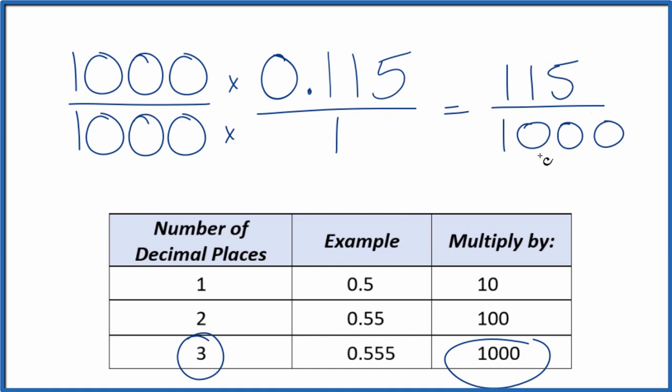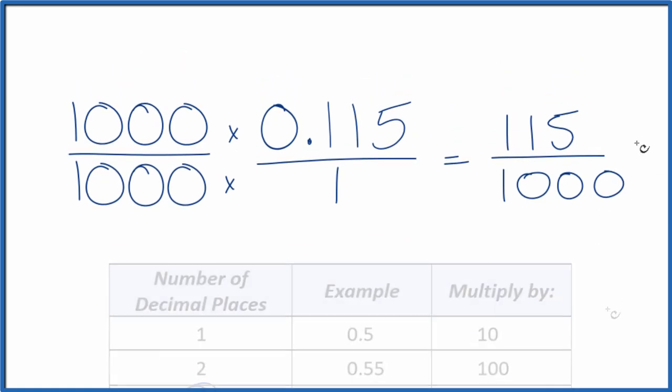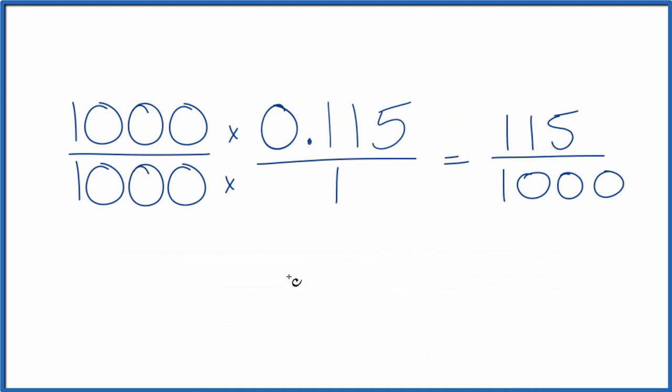But we can actually simplify this, since 5 will go into 115 and 1,000 evenly. Let's do that. So 5 goes into 115 23 times.